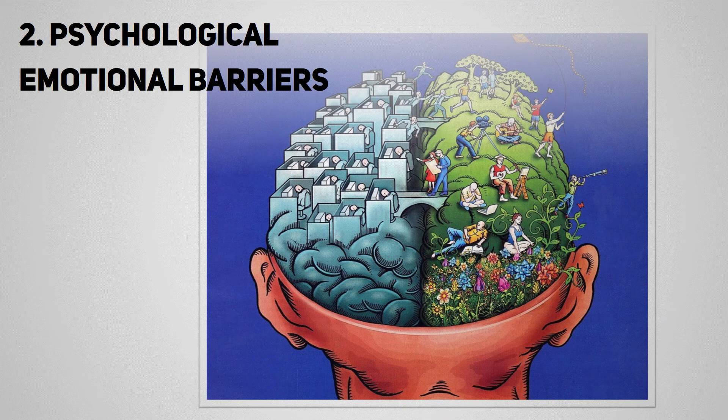Moving on to psychological barriers — emotional or psychological factors act as barriers to communication. For example, a worried person cannot communicate properly, and an angry person cannot understand the real meaning of a message being communicated. In such situations, communication may not work properly as expected.